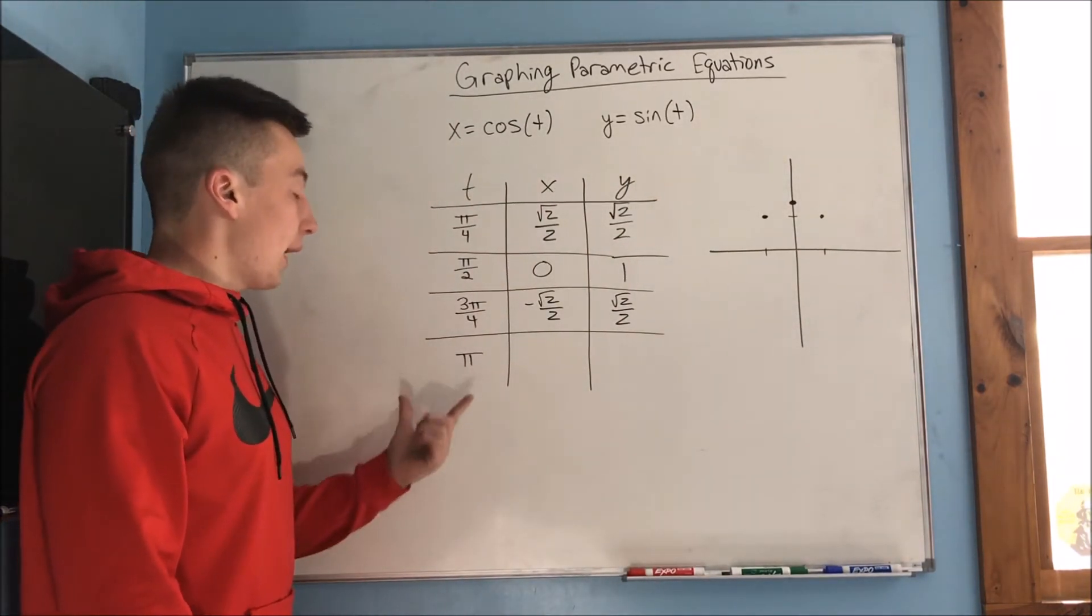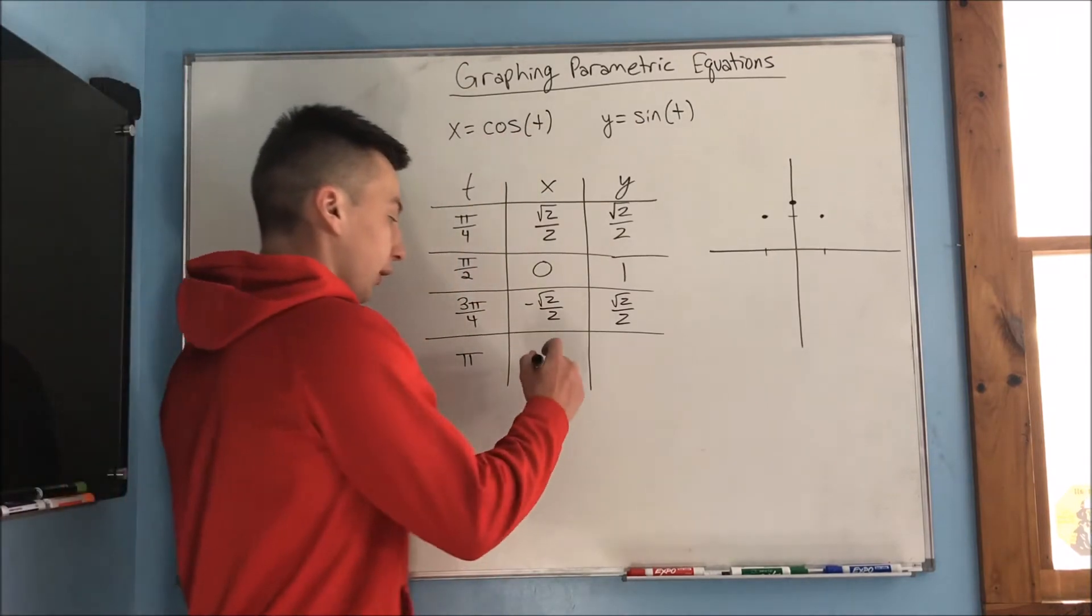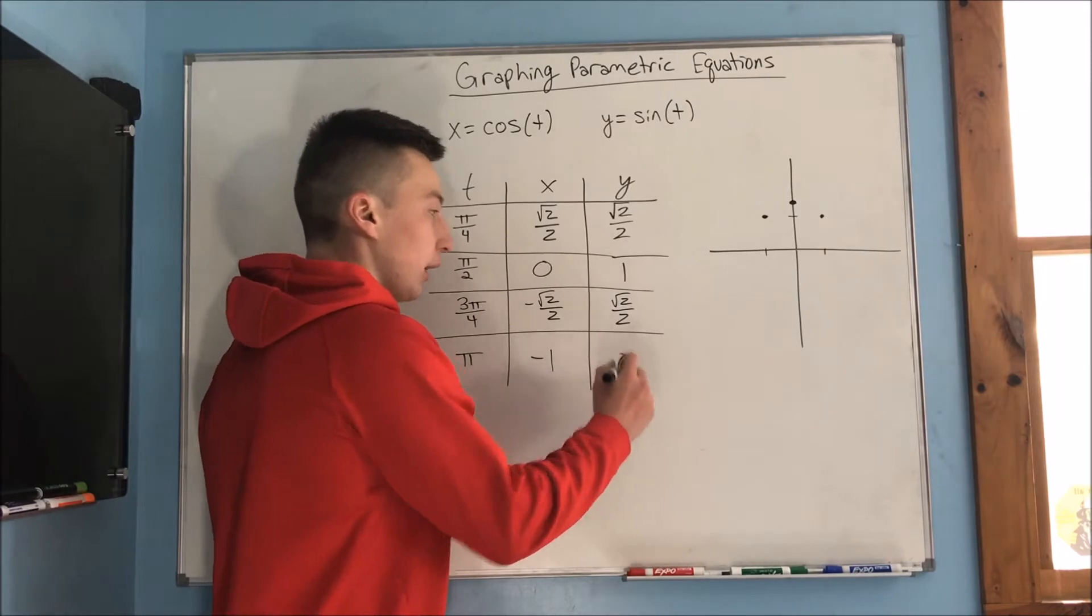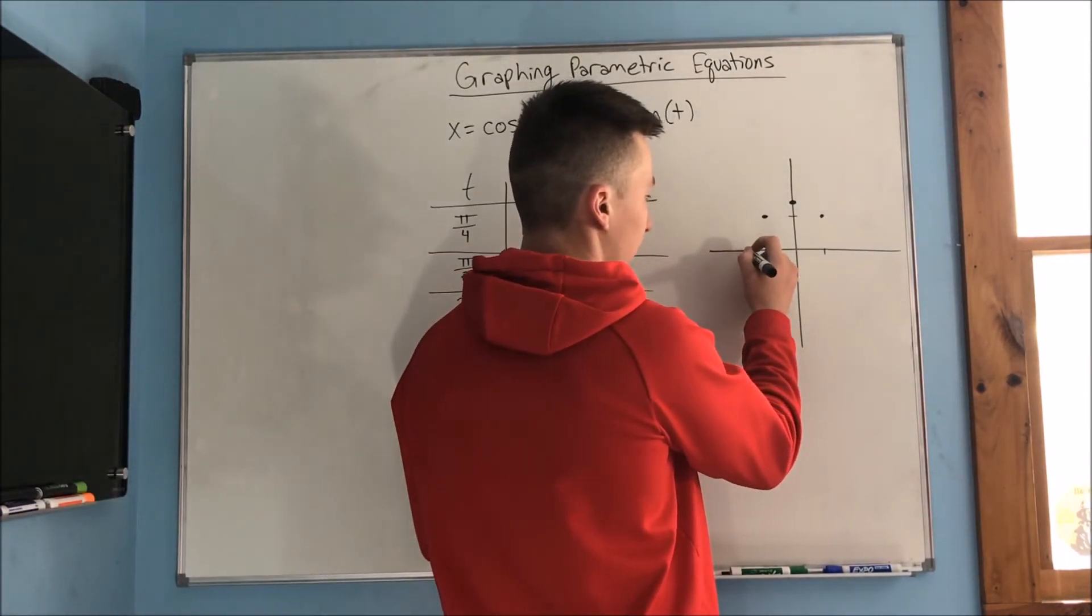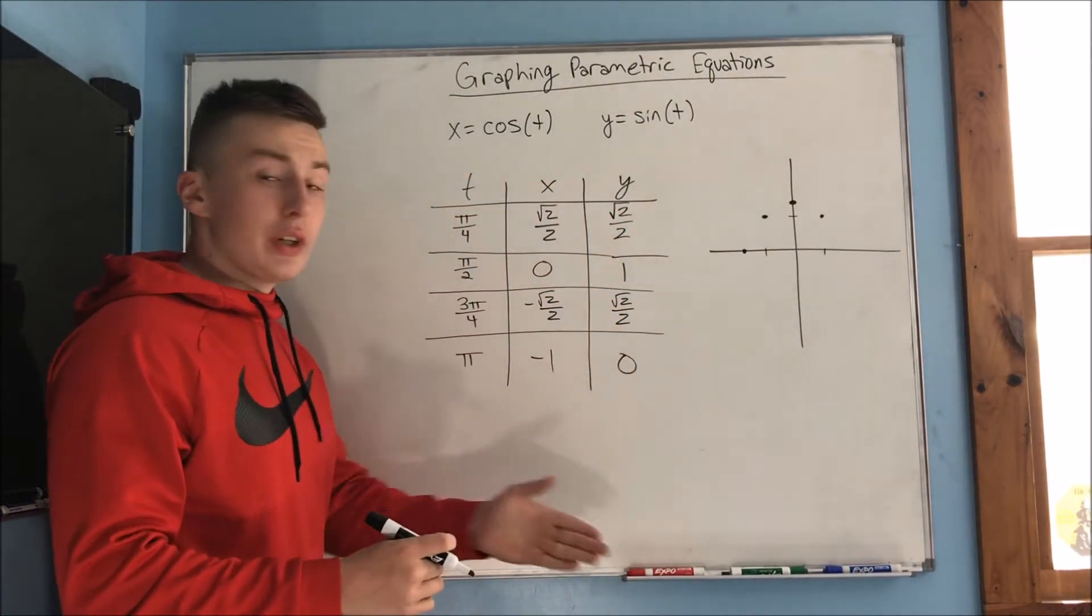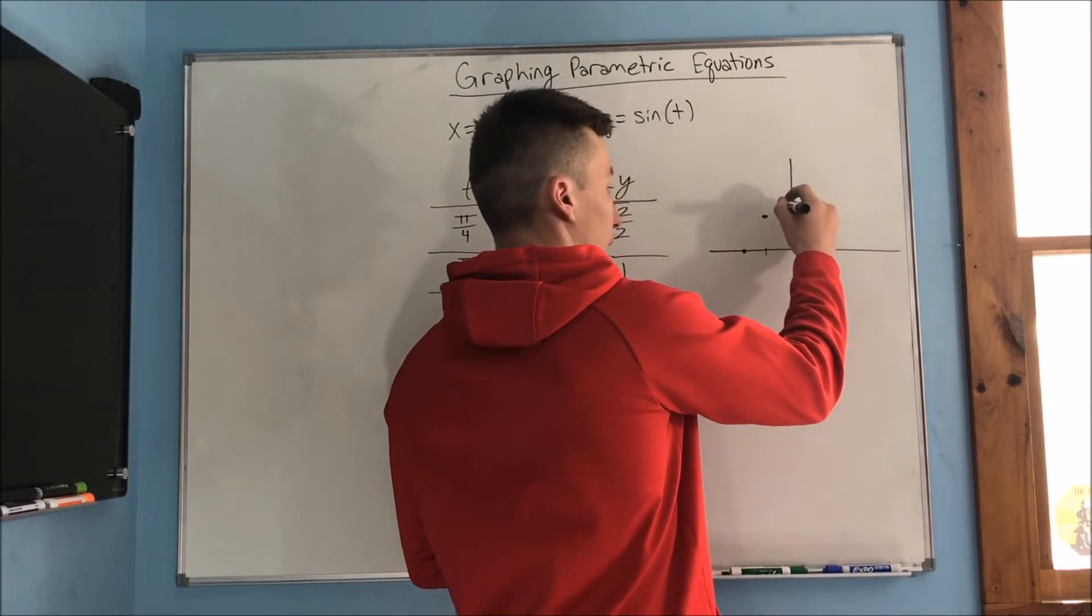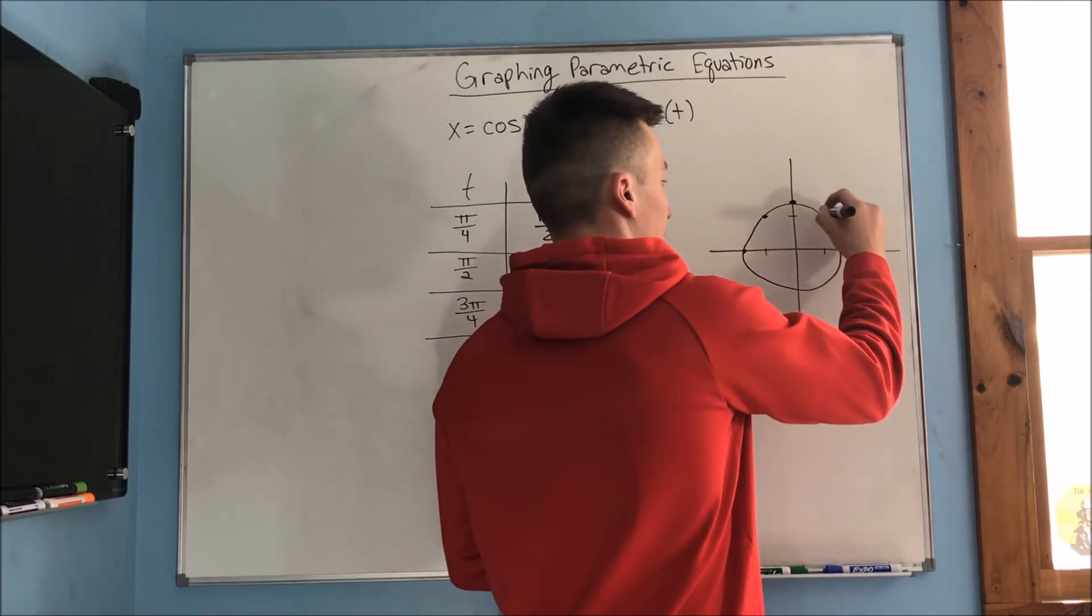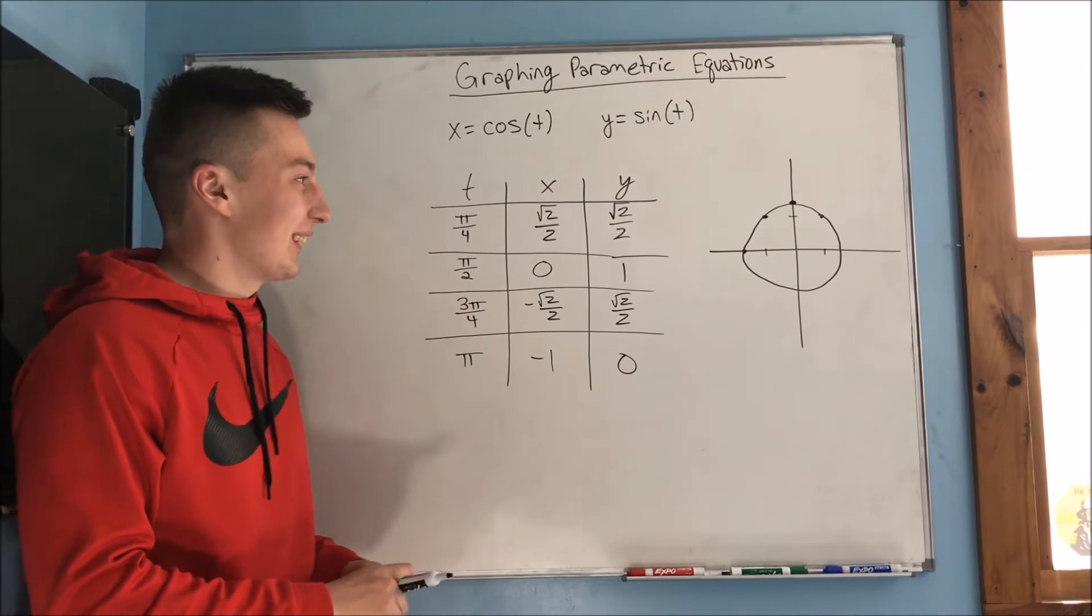And what about pi? So cosine of pi, we know that's negative 1. And sine of pi, we know that is 0. So we're going to have negative 1, 0. So that's going to be more over here. So you can already start to see that circle start to form. So we're going to be going kind of like this and around. That's about as good as I can do for trying to circle, I guess.